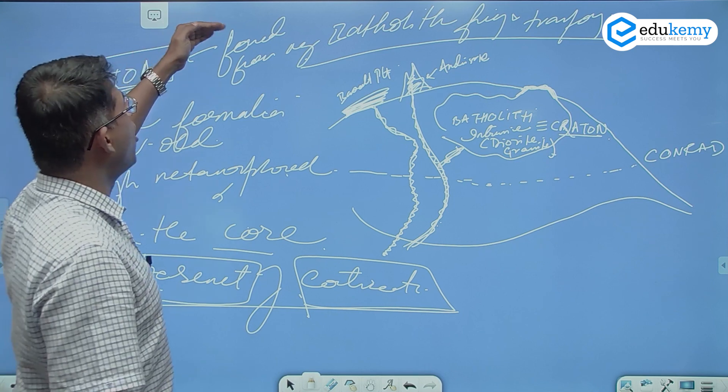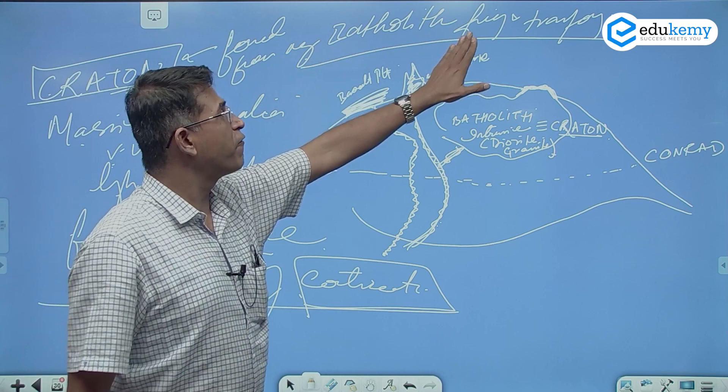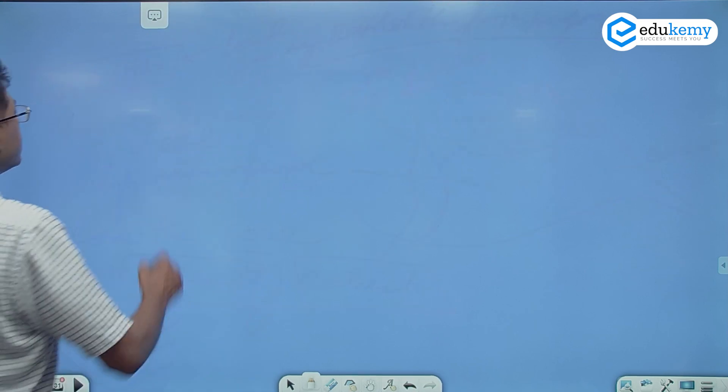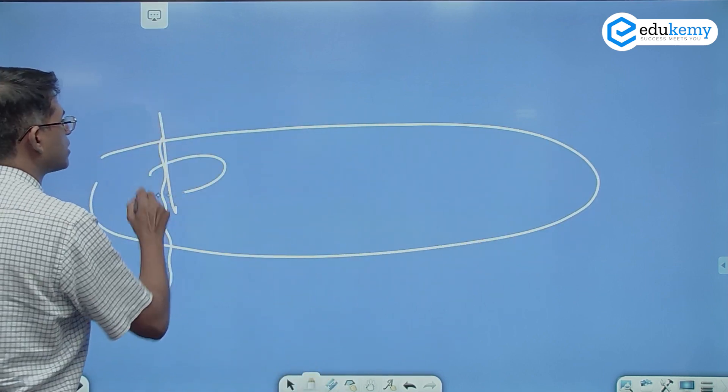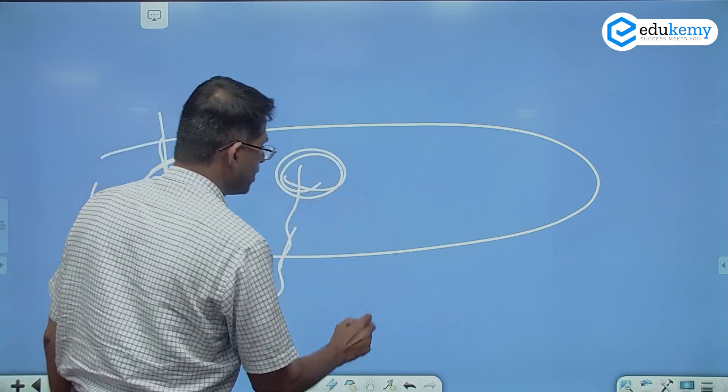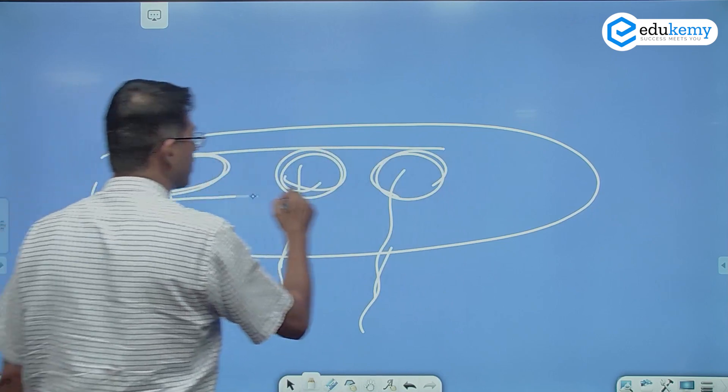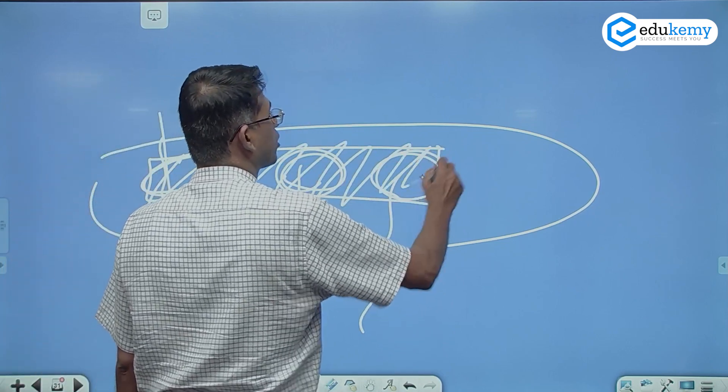They are formed from what? From many Batholiths, fusing and transforming. So if I give an analogy here, this was a massive continent. Some volcanic eruption here, this was a Batholith. Some volcanic eruption here, this was a Batholith. Some eruption here, this was a Batholith. In time, they will all fuse together. And this massive one is now the Craton.